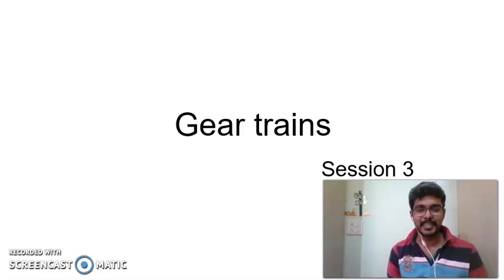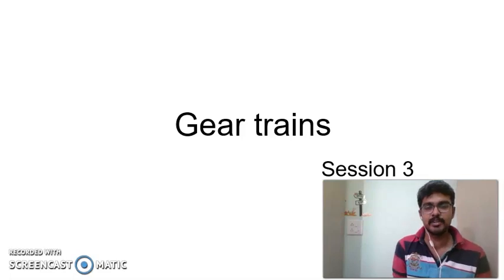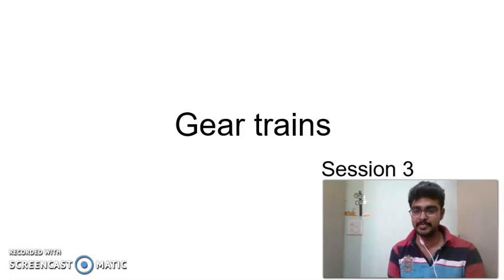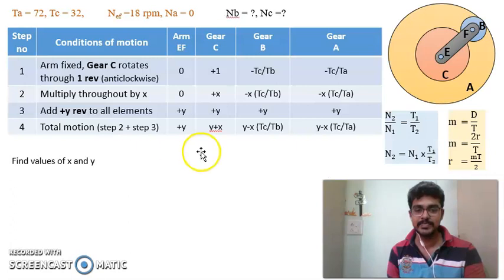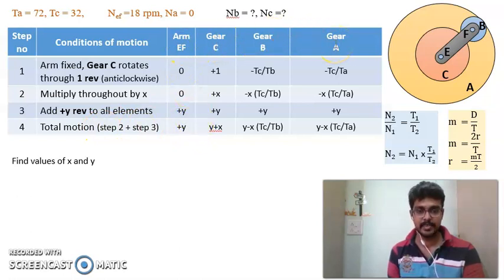Hello friends. In the previous session, we had reached up till tabulating the required data for the sum that we were solving. In this particular session we will go forward from where we stopped. This is what we did in the last session — we had reached till step number 4 where we had found the total motion for arm, for gear C, for gear B, and for gear A.